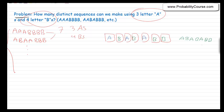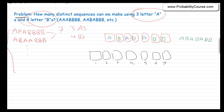So in general, my question is this: I have seven spots — one through seven — and I need to choose three of them for A's. Choosing three for A's means whatever is left is going to be B's. So the number of ways to do that is seven choose three. That is the answer to the question.